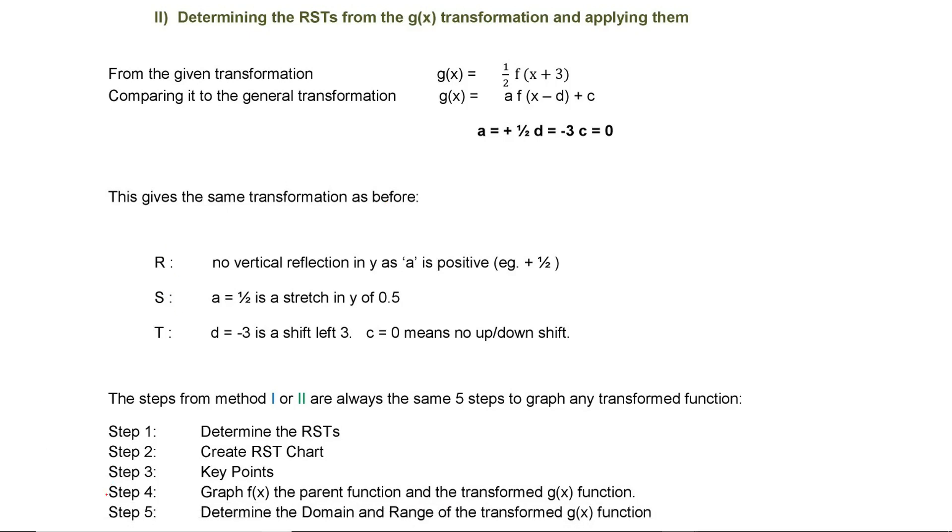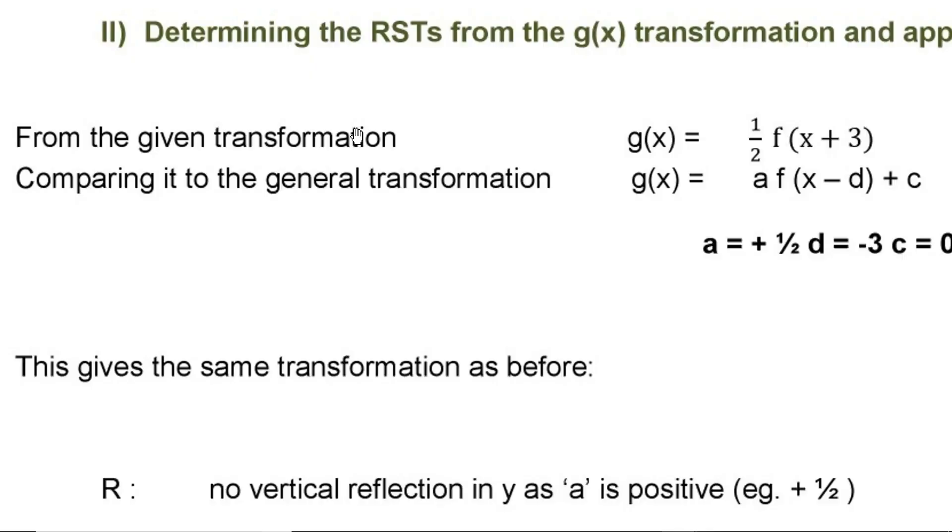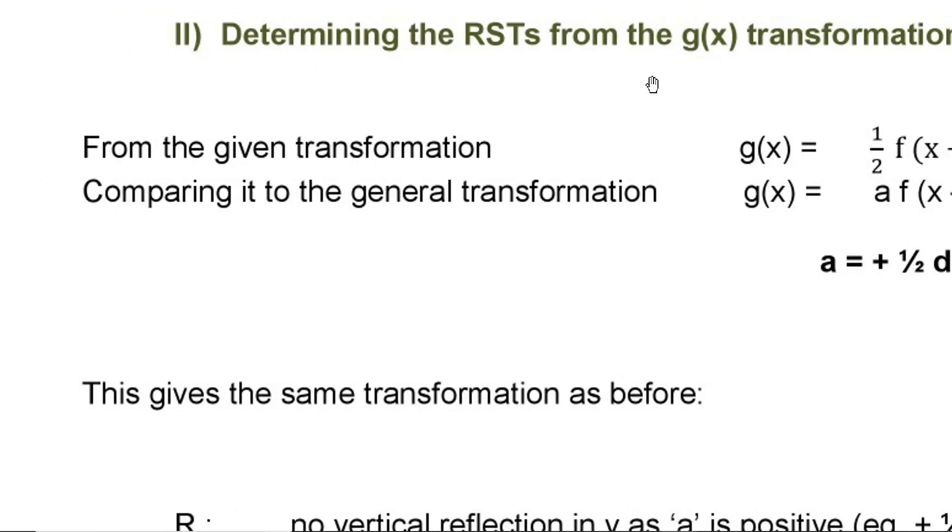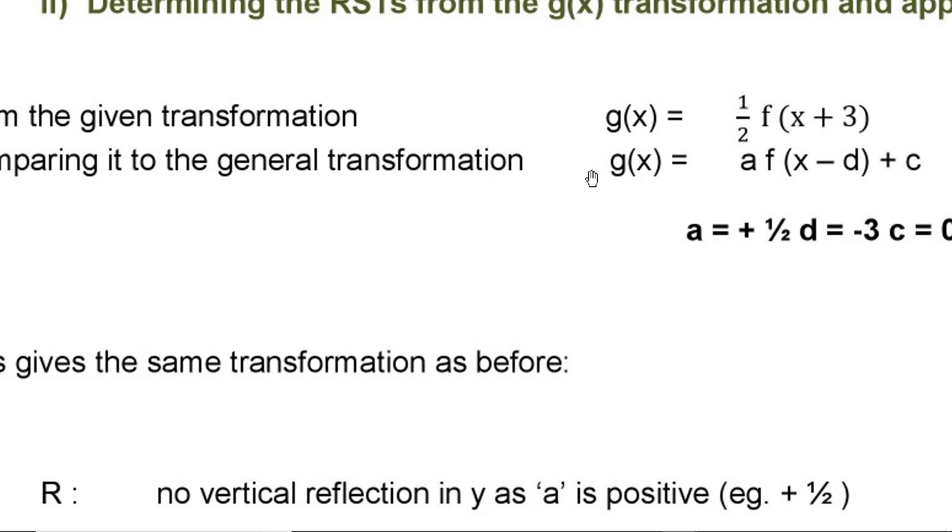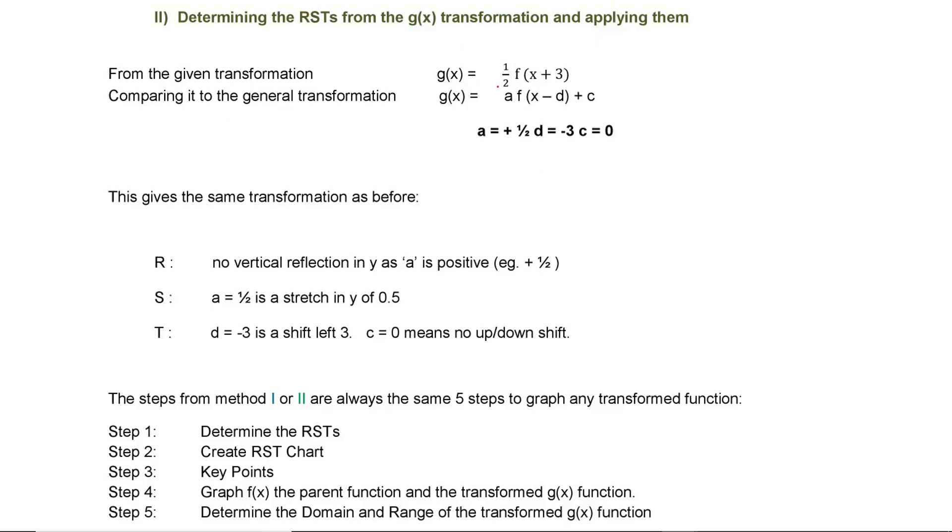Now the second thing is determining the RST from g(x) transformation and then applying that. What we will do here is g(x) = ½f(x+3). Let us compare this to the general transformation: g(x) = a·f(x-d) + c. a is ½, d is -3, and c is 0. So this gives us the same transformation as we have seen.